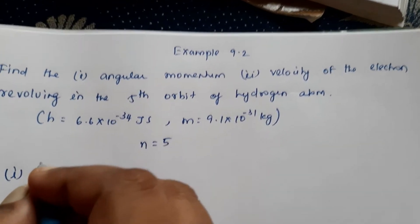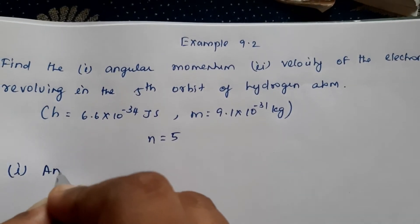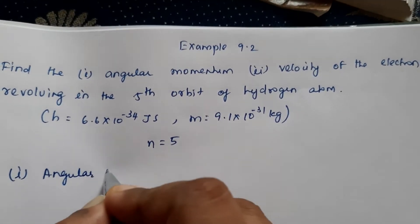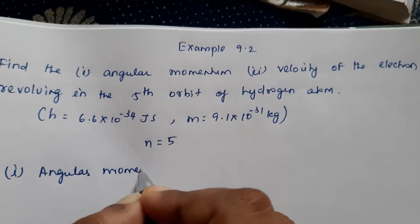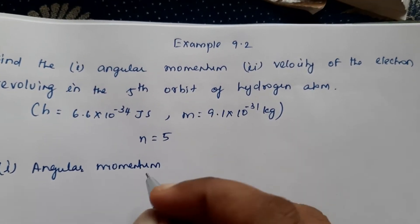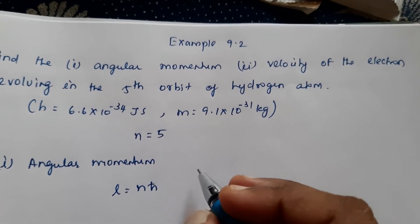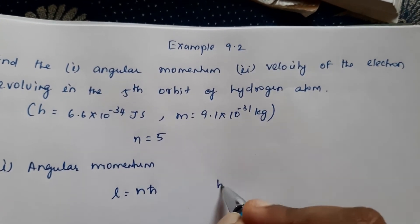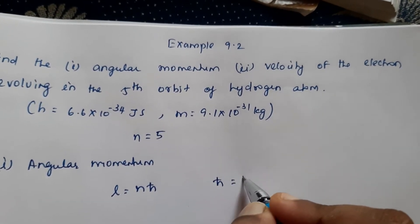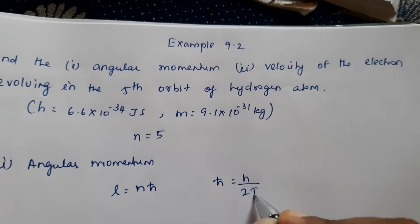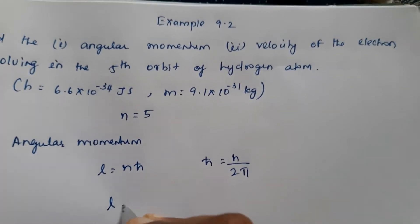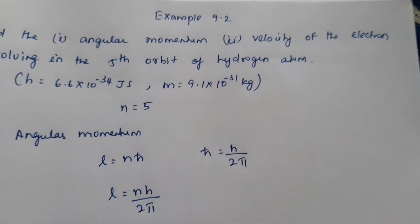Now first we can go for finding the angular momentum. Angular momentum L is equal to N H cross. But we know H cross is equal to H by 2 pi. So I can write L is equal to N H by 2 pi.